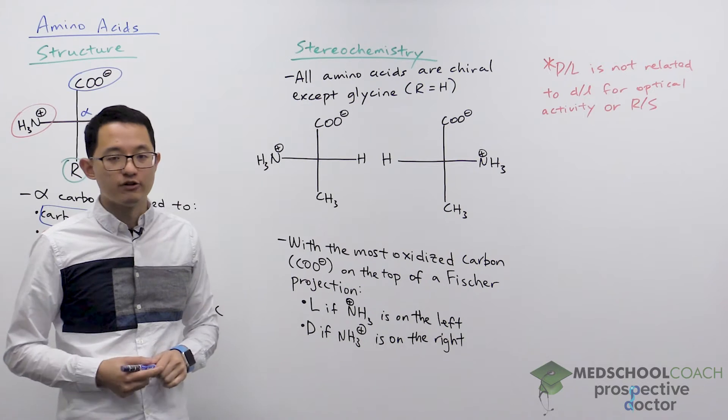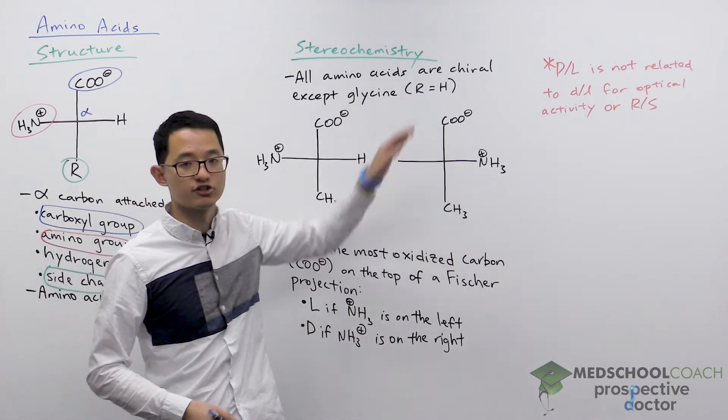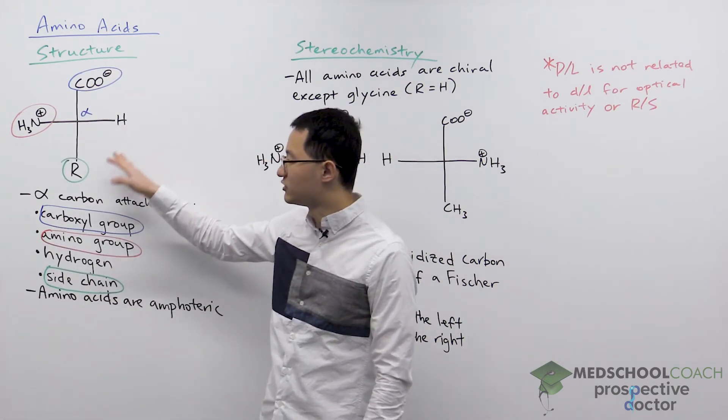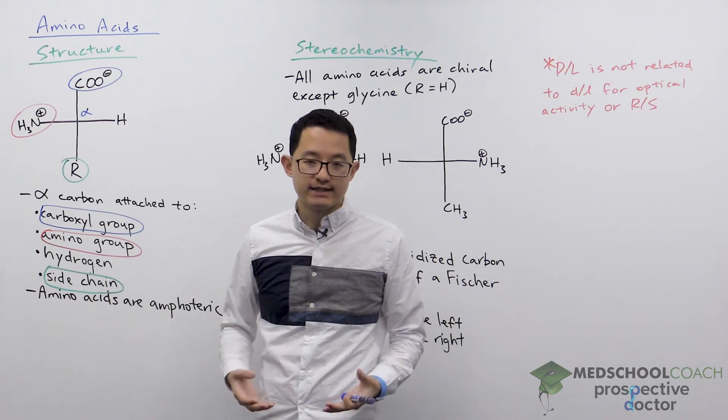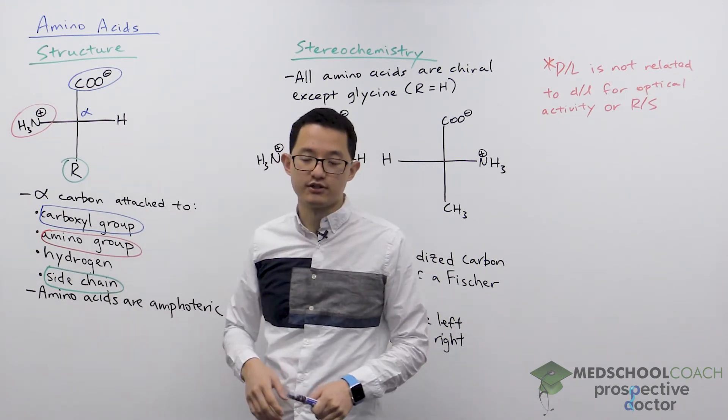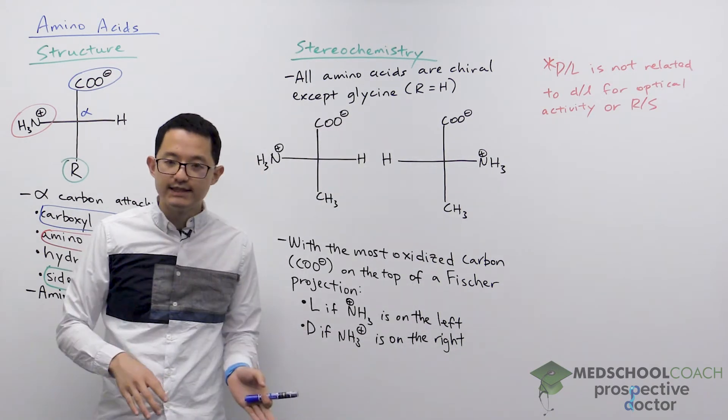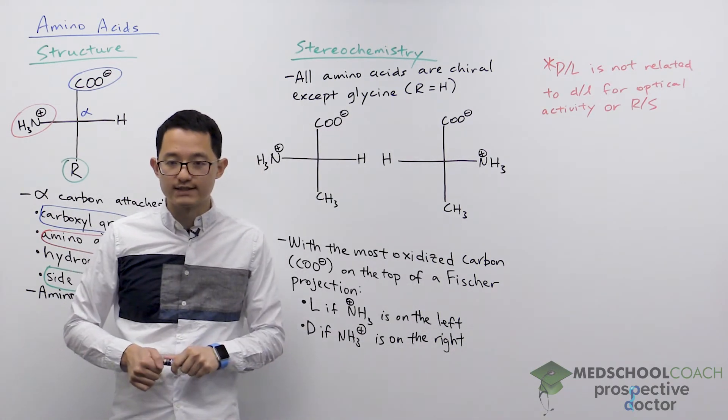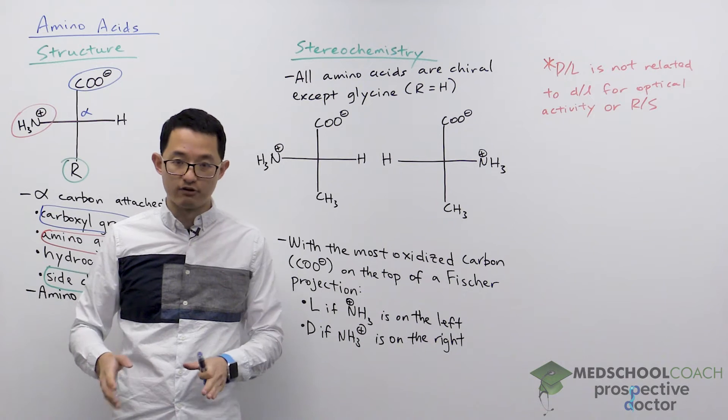The reason why glycine is not chiral is because its side chain is a hydrogen atom. So because it's bound to two hydrogens glycine is not a chiral molecule. It does not have a chiral center. But the remaining 19 of the 20 amino acids are all chiral.